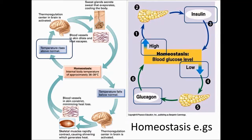When the body temperature rises above the normal 37 degrees, the brain sends signals to the skin to sweat and the blood vessels in the skin to dilate to cool the body.